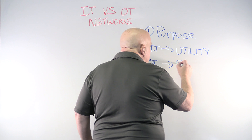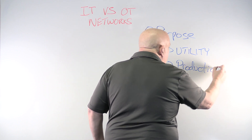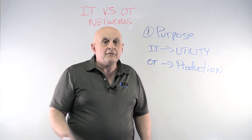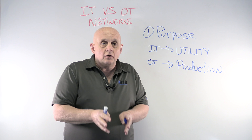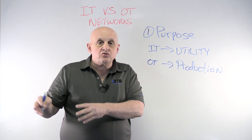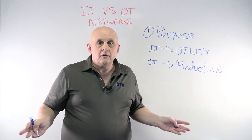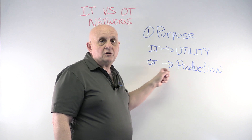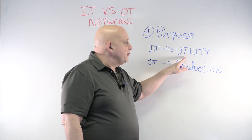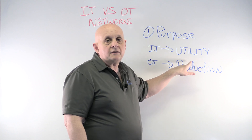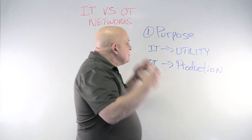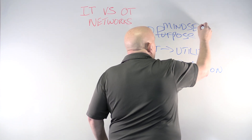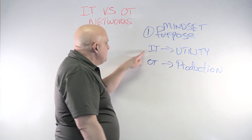OT, on the other hand, is actually part of production — part of the production process. There is no way you can separate the controls and the network that runs the controls from the actual production. I was at Lipton Tea and I saw them making tea bags — you can't do one without the other. OT networks are really integral to the production process. IT people don't look at themselves as part of accounting or engineering or manufacturing — they're just a service. There's a whole different mindset about what we're doing.